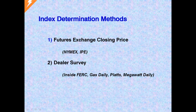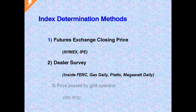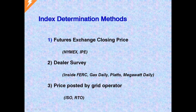This approach relies heavily on honest and accurate reporting by the surveyed parties. And while generally this has been the case, there have been some scandals for attempts by traders to manipulate indices through false reports. Another approach is to rely on the price posted by operators of power grid systems such as independent system operators, ISOs, or regional transmission operators, RTOs. These prices are often set based on results of clearing prices at auction.